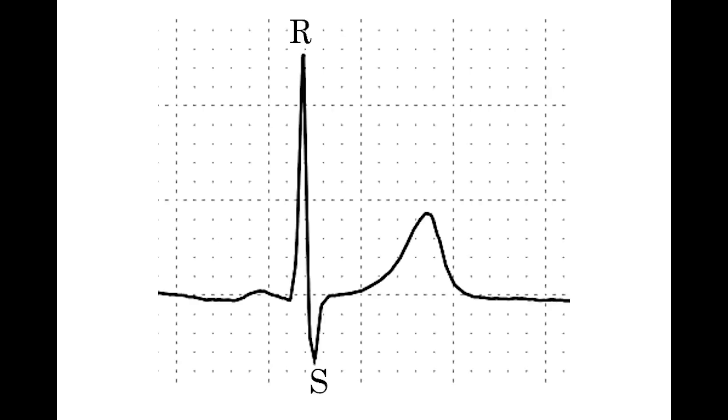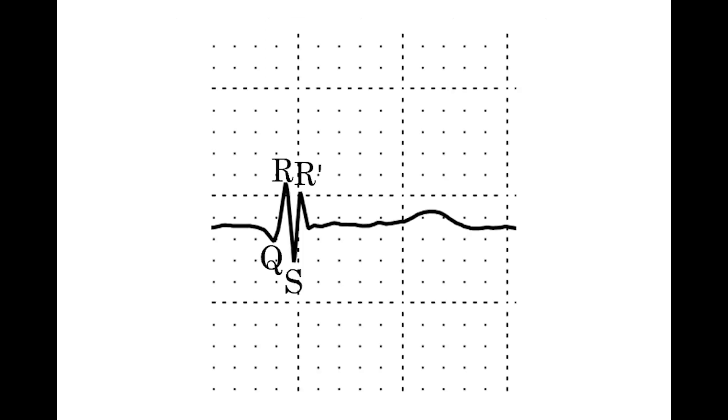The QRS complex is considered positive if the amplitude of the positive deflection, R wave, exceeds the amplitude of the negative deflections, Q wave and S wave. If the QRS complex has multiple positive and negative deflections, the sum of all R waves or the sum of all S waves is considered. The second positive deflection of the QRS complex is called the R prime. The third positive deflection of the QRS complex is called R double prime.